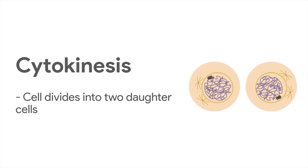Cytokinesis is sometimes discussed as a part of mitosis. This is the last stage of cellular life and occurs when the cell is divided into two. A lot of the work of cytokinesis begins during telophase. In animal cells, the cell membrane begins to pinch, forming an indentation called the cleavage furrow. This indentation will slowly form a membrane down the center of the cell's cytoplasm until the cell splits into two daughter cells.